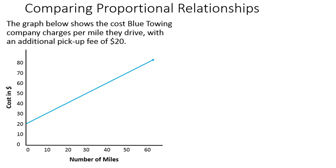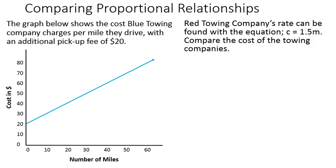So let's compare two proportional relationships that are written in different ways. Number one, I have a graph below here. It shows the cost of blue towing company charges per mile they drive with an additional pickup fee of $20. So you see that the graph starts at $20 and then goes up at a consistent rate. That rate of change, or how much it goes up over time that it goes across, would be called the slope. Red towing companies' rate can be found by this equation. The cost is equal to 1.5 times the number of miles. So our job is to compare the cost of the towing companies.